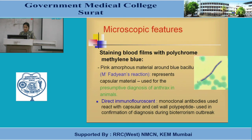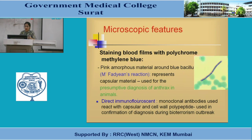Immunofluorescence method can also be used, where fluorescent dye-labeled monoclonal antibodies combine with capsular antigen and cell wall polypeptides — useful for diagnosis during bioterrorism outbreaks. On nutrient agar at 37°C, Bacillus anthracis produces irregular, round, raised, dull, opaque colonies with a frosted glass appearance. Under low-power microscopy, interlacing chains at the colony edges produce the medusa head appearance.